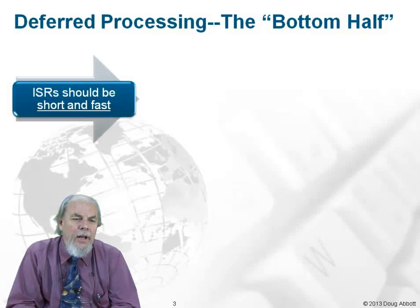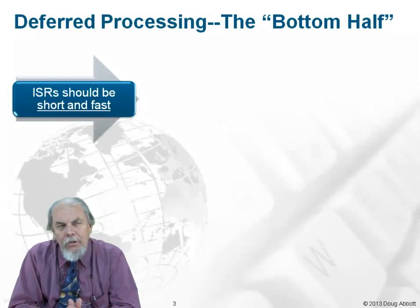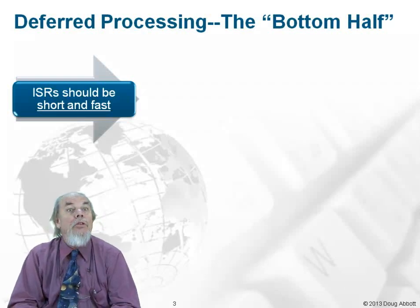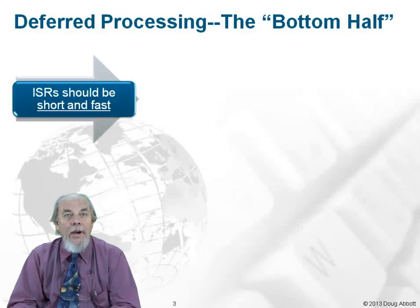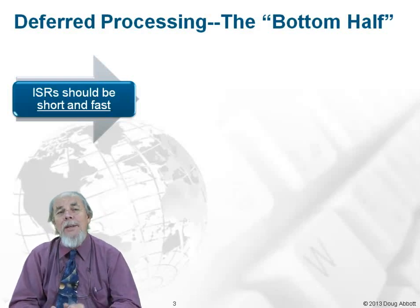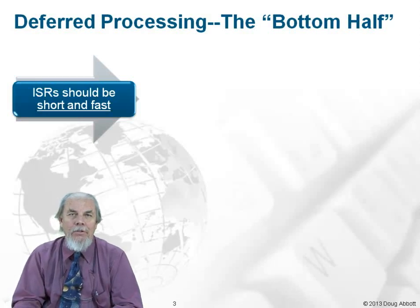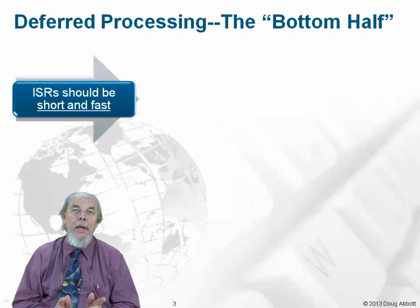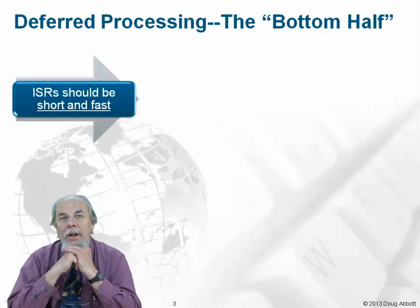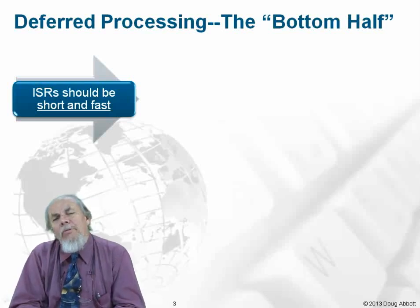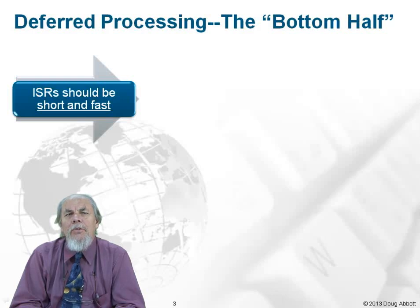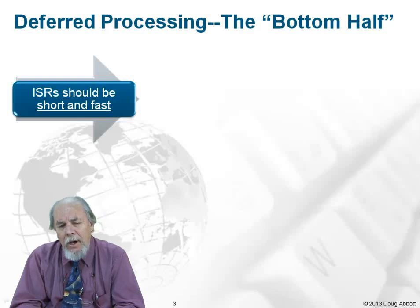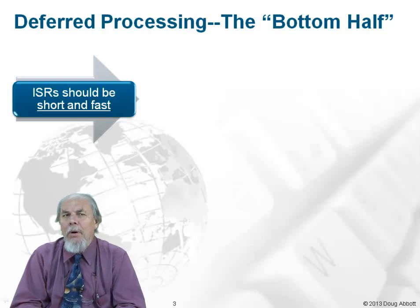Good practice says that interrupt service routines should be short and fast. We want to get the device's interrupt re-enabled as quickly as possible, and we also want to get back into process context as quickly as possible, because we have a better handle on the system in process context. So virtually all operating systems today divide interrupt handling into two parts.